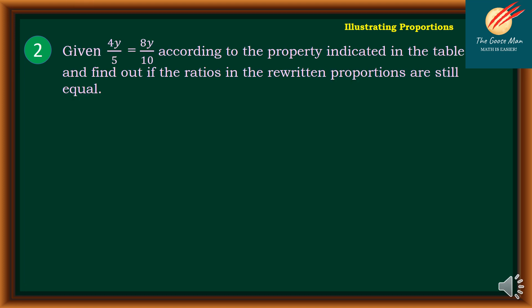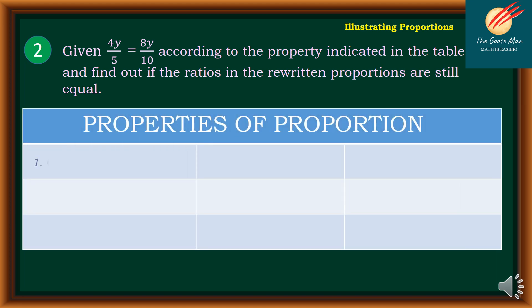Let's continue. Given 4y over 5 is equal to 8y over 10, we apply each property. Using the cross-product property: 4y times 10 is equal to 5 times 8y, so 40y is equal to 40y. Using the reciprocal property, interchange to get 5 over 4y is equal to 10 over 8y. Using the cross-product: 5 times 8y is equal to 4y times 10, giving 40y is equal to 40y.